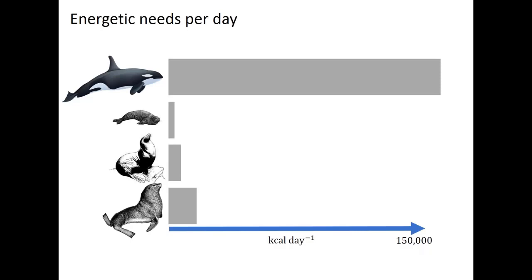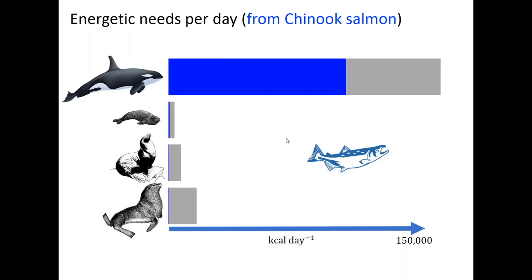These bioenergetics models allow us to estimate the energetic needs per predator per day. Not surprisingly, the largest predators like orcas or killer whales have the highest energetic needs per day. We can also look at the fraction of that energy that comes from Chinook salmon. Species like orcas are salmon specialists — most of their diet comes from Chinook salmon. Other species, particularly the pinnipeds, have relatively low fractions of their diet coming from Chinook salmon, but numerically these pinniped populations are increasing, potentially driving competition with orcas.